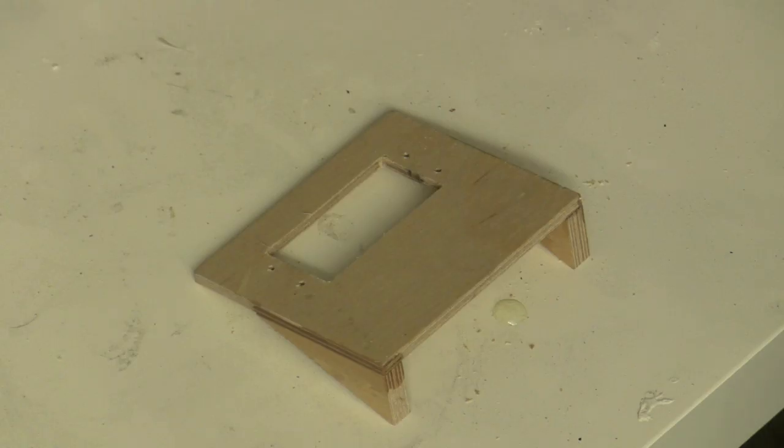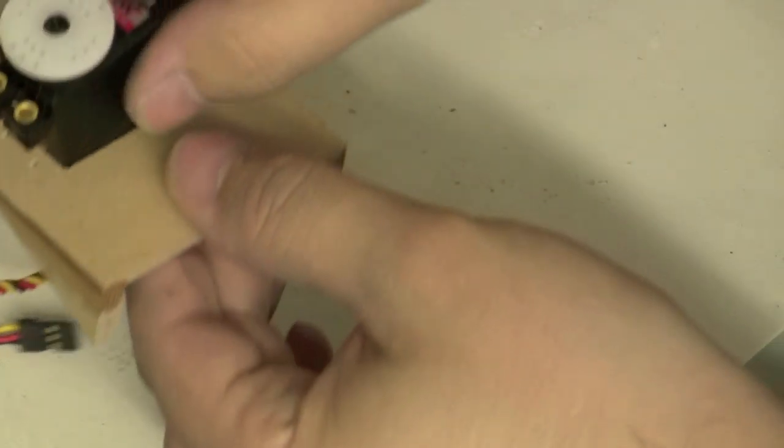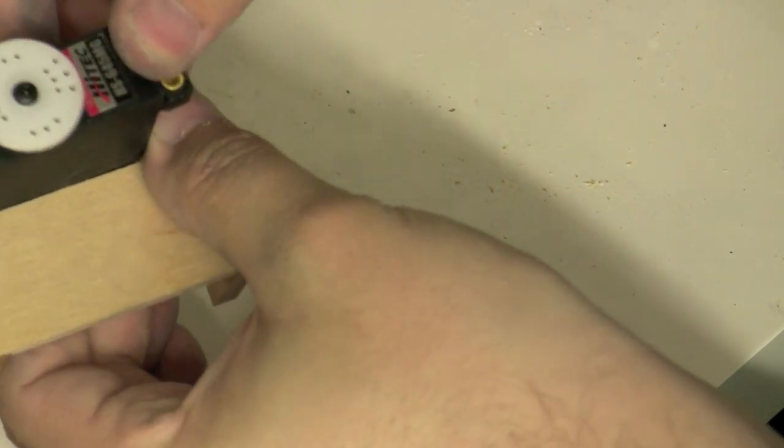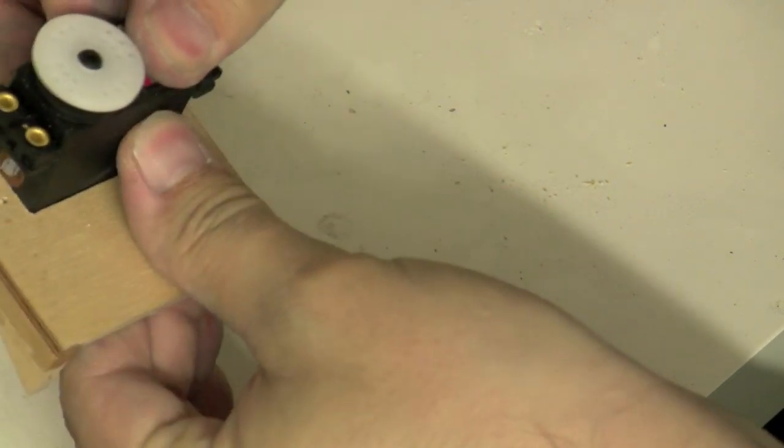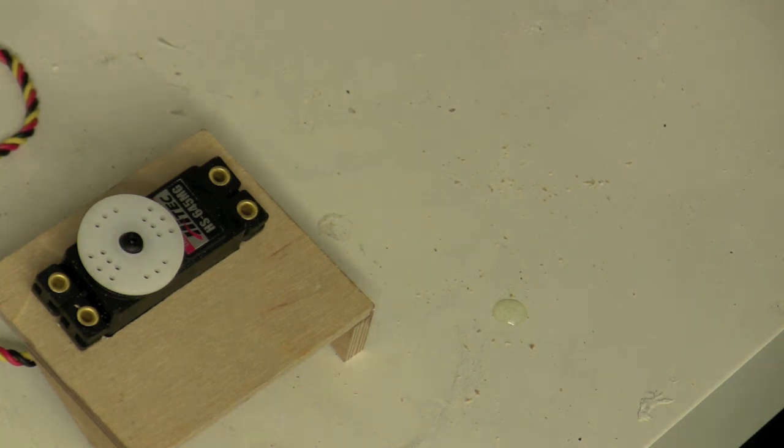Okay, let's go ahead and put that servo in. We're gonna want the servo arm or wheel or whatever to be on the left side. There we go. All right, got her in there. Let's go ahead and start putting in some screws.